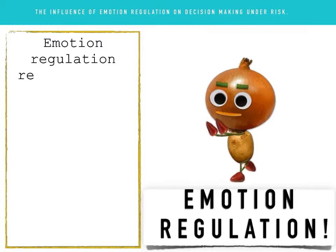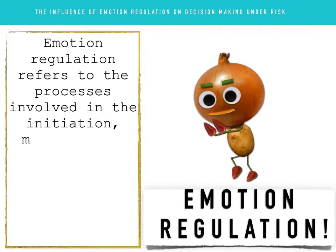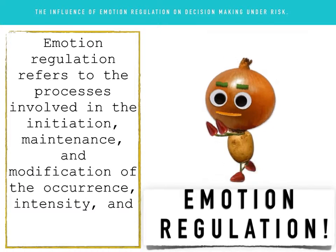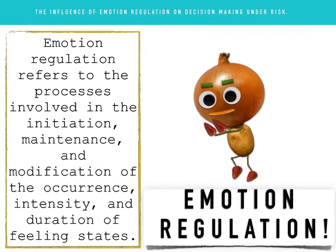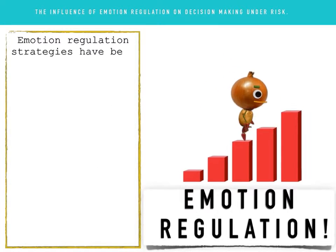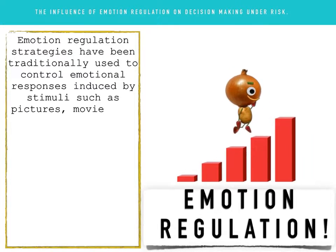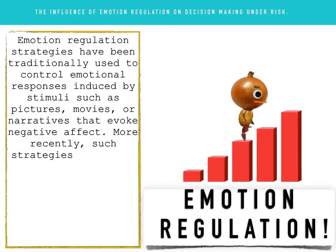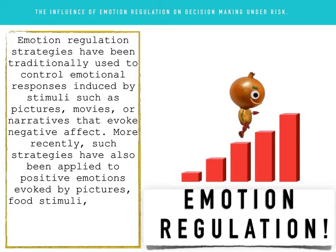Emotion Regulation refers to the processes involved in initiation, maintenance, and modification of occurrence, intensity, and duration of feeling states. Emotion regulation strategies have been traditionally used to control emotional responses induced by stimuli such as pictures, movies, or narratives that invoke negative affect.